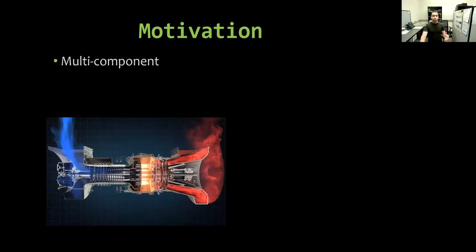In different applications in science or engineering, we might encounter systems that have multiple components, where each component has its own characteristics, its own geometry, and maybe different requirements. For example, if we consider this gas turbine, we have a compressor, a burner or combustion chamber, and finally this turbine section.